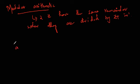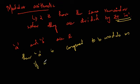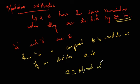Modular arithmetic: if a and b are integers and m is a positive integer, then a is congruent to b modulo m if m divides (a − b). The notation is a ≡ b (mod m). This simply means they have the same remainder when divided by the positive integer m. If they are not congruent, it is written as a ≢ b (mod m).